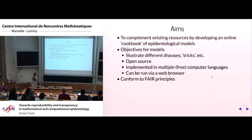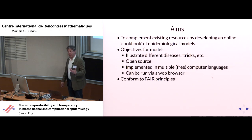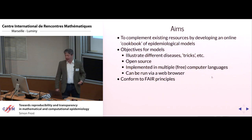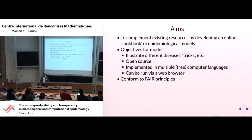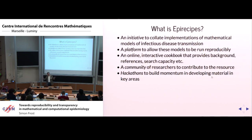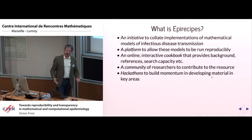For the last five minutes, I'll discuss what we've been trying to do to fix reproducibility. I want to illustrate different diseases, how to model them, and different tricks like the Sellke construction — having things that are open source and free, implemented in different languages so you can use your favorite one, runnable via a web browser without installing anything, and conforming to FAIR principles. The initiative is called EpiRecipes — a word capturing the overall initiative, a platform on which to run models, an online interactive cookbook of models, a community of researchers, and occasional hackathons to increase the catalog of models.